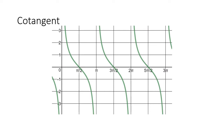Cotangent is very similar to tangent in that the range is all real numbers. The period — if you look at when it starts going down, from 0 going down to the next 0 going down, that difference is just pi. That's the fundamental period of cotangent — just pi. The domain, expectedly if you watch the cotangent video, is everything except multiples of pi: 0 pi, 1 pi, 2 pi, 3 pi. There are gaps in the domain.